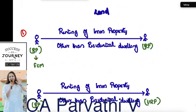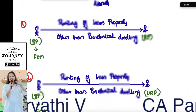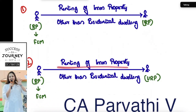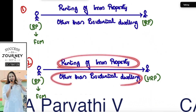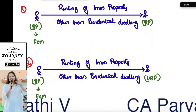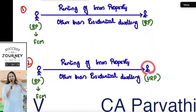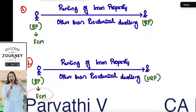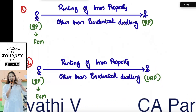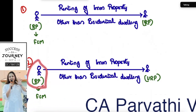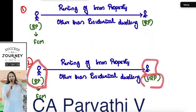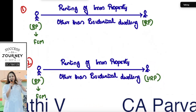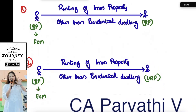The second situation: the supplier is a registered person and it is renting of immovable property other than residential dwelling — for example, land — and the recipient is an unregistered person. Here also it will be FCM, because RCM is applicable only when the supplier is an unregistered person and the recipient is a registered person. Here the supplier is a registered person, so there is no RCM. This is also under FCM.